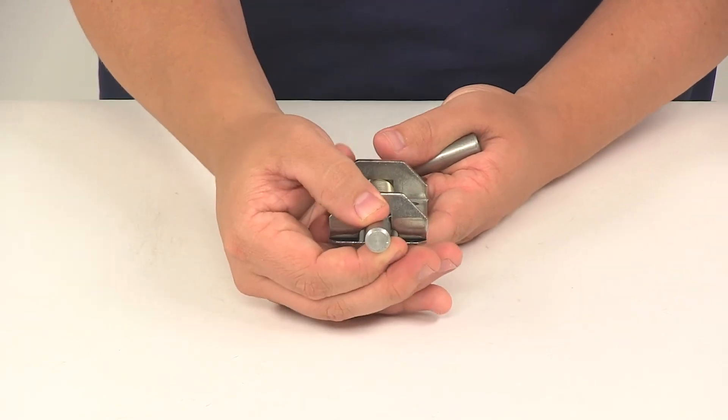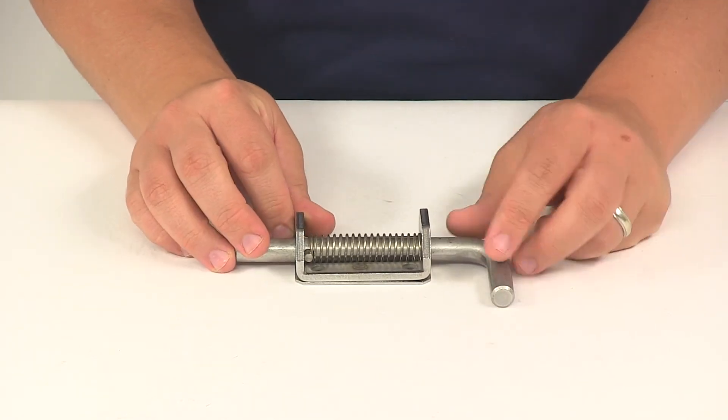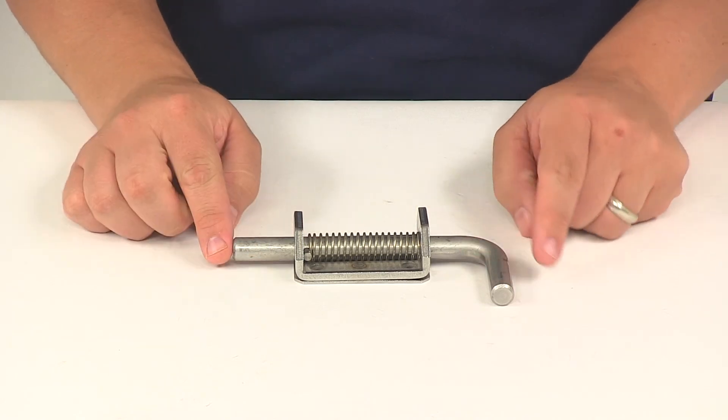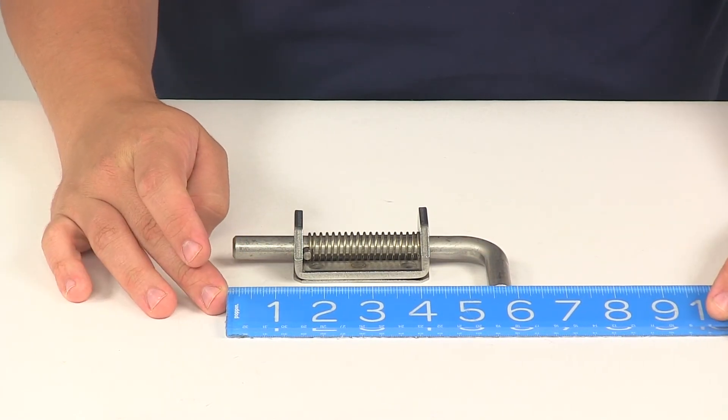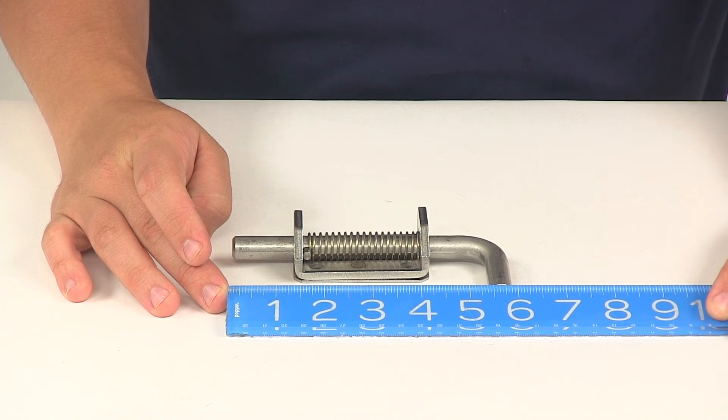The pin has a diameter of a half inch, and the overall pin length, measuring from edge to edge, gives us a measurement of about five and seven eighths of an inch long.